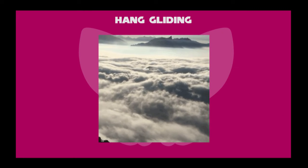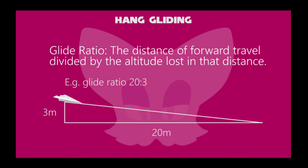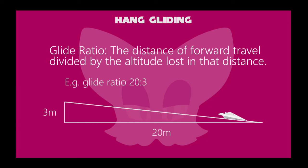The flight must have a glide ratio — the ratio of the distance forwards to downwards. For example, 20 by 3 meters. This is a formation of a right-angled triangle, like in mathematics. This means the flight travels 20 meters in a distance with a depression of height 3 meters. In terms of the Pythagoras theorem, the hypotenuse can be obtained as 20.22 meters, which is a little difference of 0.22 meters.